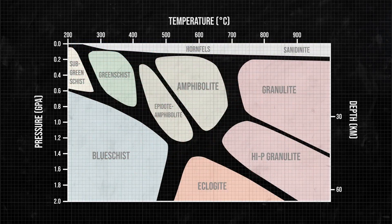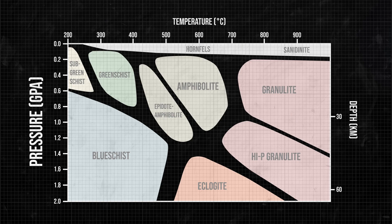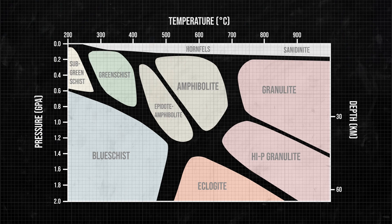Fluids also play an important role. Metamorphism happens at a sweet spot where the pressure and temperatures are high enough for minerals to transform, but not so high that melting occurs. We're talking between 200 to 800 degrees Celsius or so.